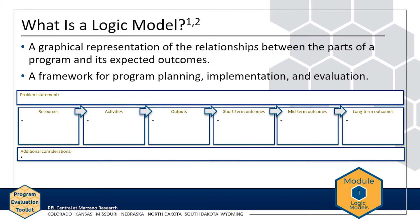You will continually update your logic model to reflect your evolving understanding of what the program is and what you expect it to accomplish. A logic model clearly defines a program and its expected outcomes by answering two major questions: one, what is the program and its activities? Two, what outcomes do you expect from the program? The answers to these questions are arranged in the logic model, which is a graphical representation that highlights the relationships between the parts of the program and its expected outcomes. Simply put, you cannot evaluate a program unless you have clearly defined what the program is and how it is expected to work.